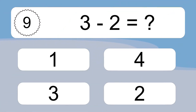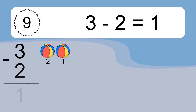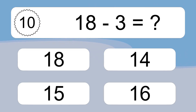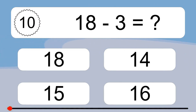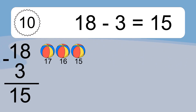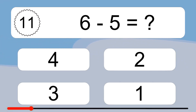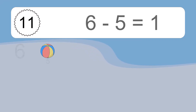3 minus 2 equals what? 3 minus 2 equals 1. Let's count it: 2, 1. 18 minus 3 equals what? 18 minus 3 equals 15. Let's count it: 17, 16, 15.